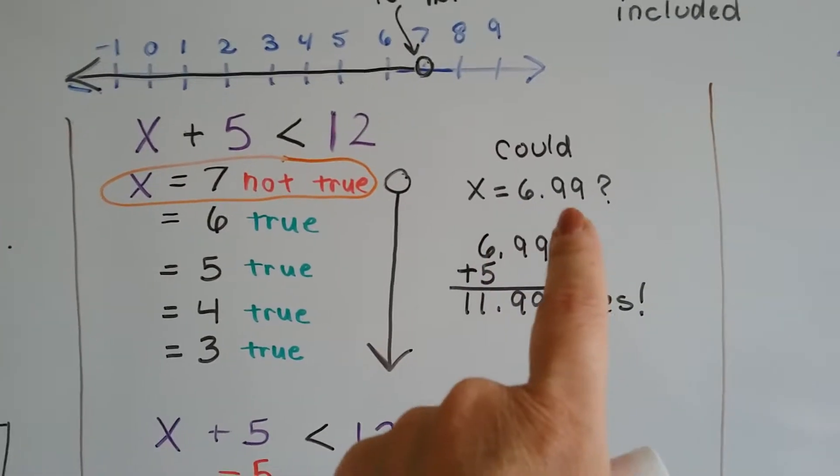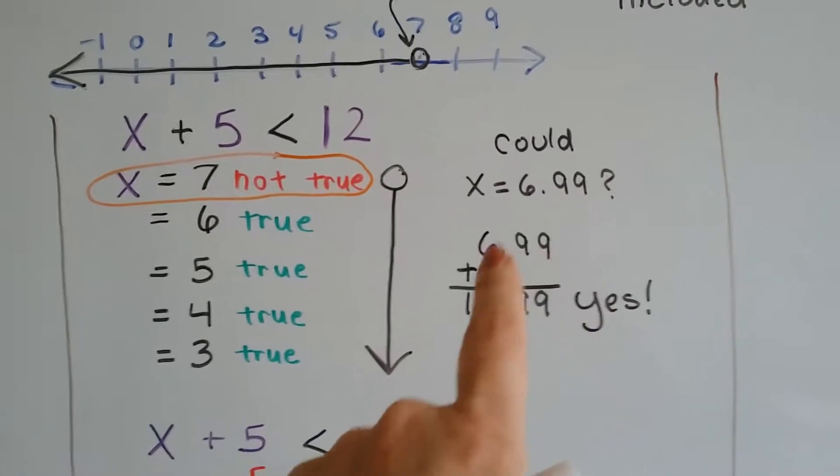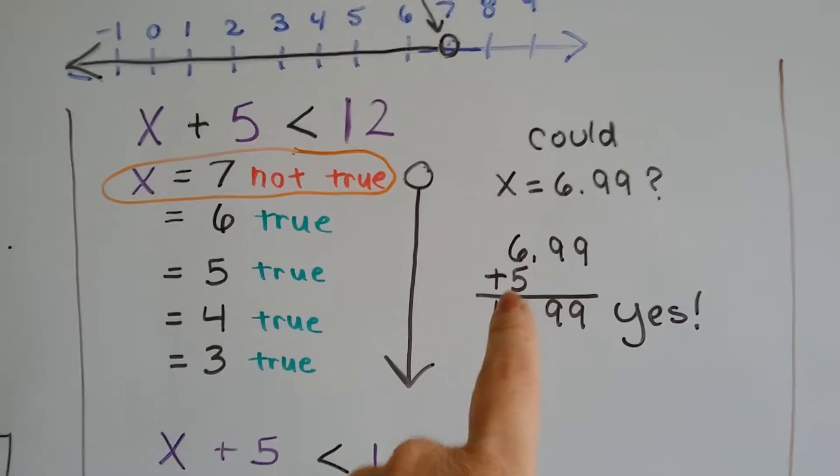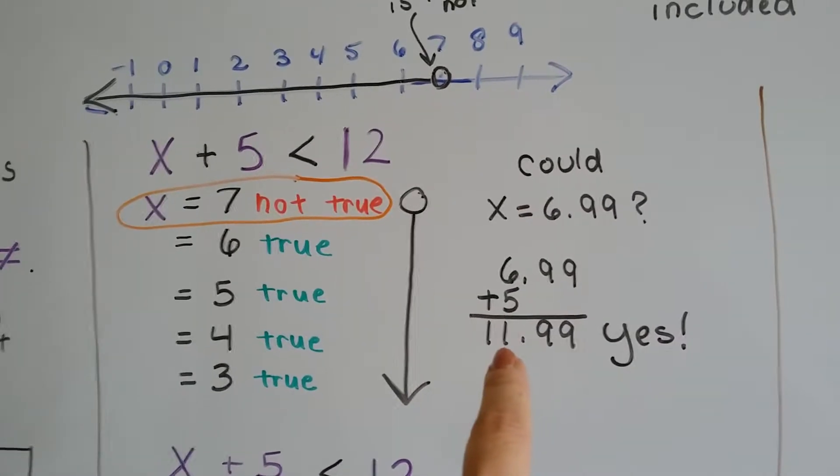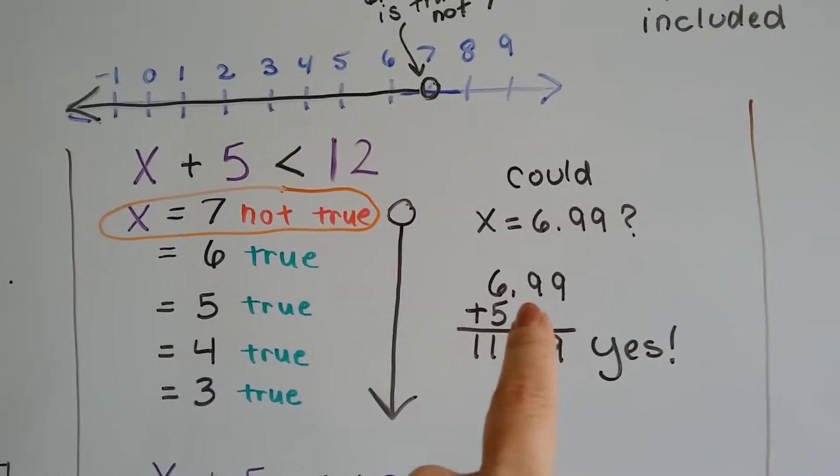But could 6.99 be true? We know 7 is not true. What about 6.99? Well, 6.99 plus 5 is 11.99. Yes, it is true. 7 is not true, but 6.99 is.